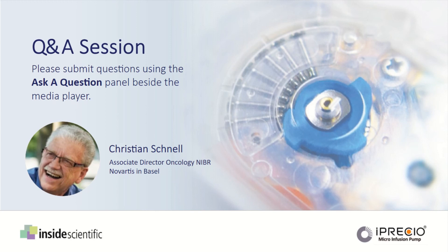A question asks whether implantable pumps have been used for intraperitoneal dosing and how to secure the cannula in the abdomen. I have used the pumps for subcutaneous delivery, which is easier. For intraperitoneal infusion, it is certainly possible, but I would strongly recommend securing the tip of the infusion catheter to the abdominal wall. Without securing it, you risk intestinal loops wrapping around the catheter. This is easy to avoid by properly securing the catheter to the abdominal wall.